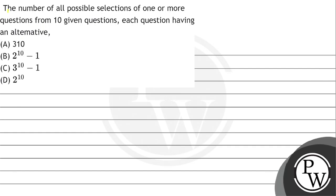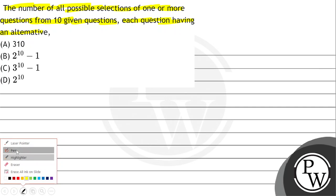The question asks: find the number of all possible selections of one or more questions from 10 given questions, where each question has an alternative. The key concept which is going to be used in this question is as follows.